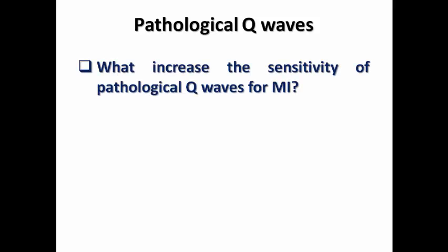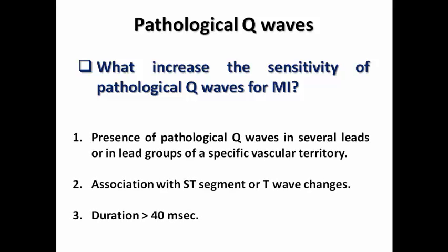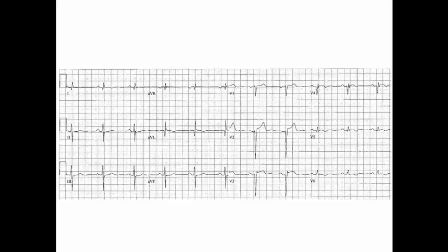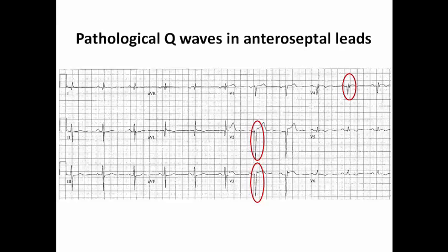What increases the sensitivity that pathological Q-waves are caused by MI rather than other structural heart disease? Number one, pathological Q-waves in several leads or a lead group following a specific coronary artery territory increases the likelihood of MI. Number two, association with ST-segment or T-wave changes increases the probability. Number three, duration more than 40 ms increases sensitivity for MI. In this ECG example, pathological Q-waves in V2–V4 exceeding 40 ms with depth more than 1 mm appear in the anteroseptal leads and are associated with ST elevation — suggesting anteroseptal STEMI rather than other structural heart disease.